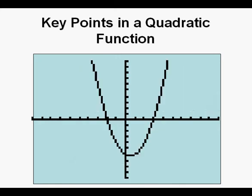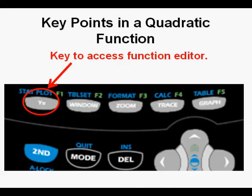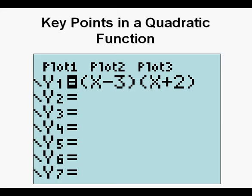But what if we have a quadratic function that isn't so nicely packaged, where the vertex, y-intercept, and x-intercepts are not pointed out to us exactly? Here we'll go to the function editor view by pressing the y equals key at the upper left of the keypad. The equation entered is (x minus 3) times (x plus 2). Now press graph.